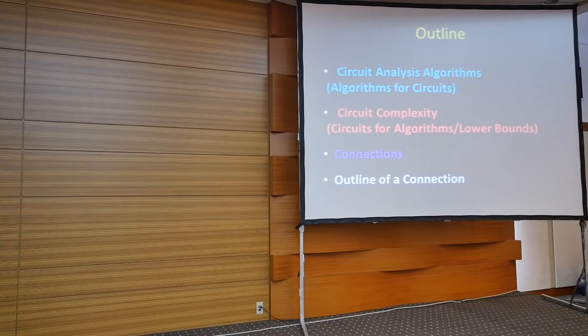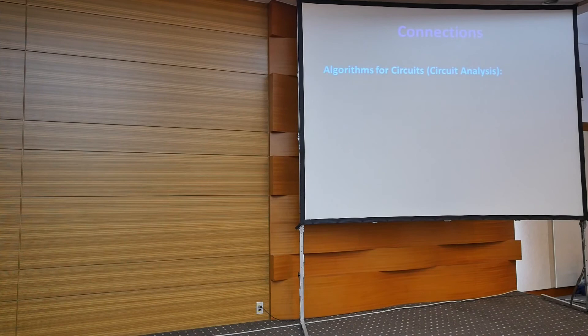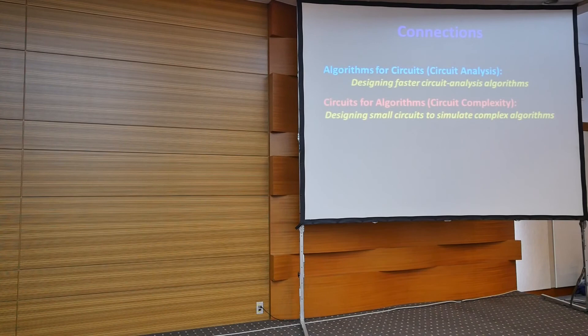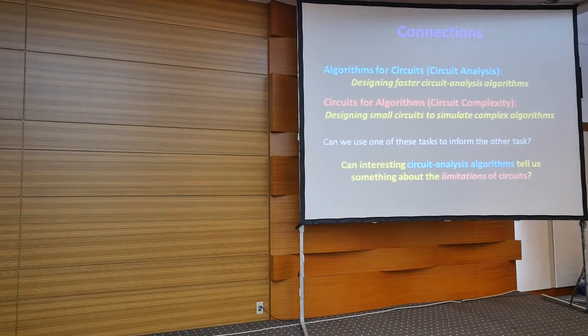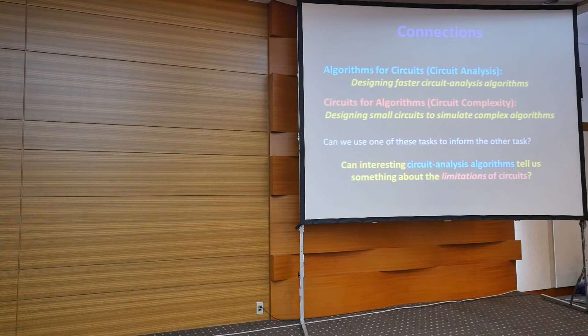Now I'll talk about the connections between these two areas. In algorithms for circuits, we're designing faster circuit analysis algorithms — taking an arbitrary circuit as input and saying something interesting about it no matter what it is. In circuits for algorithms, we're trying to design small circuits to simulate complex algorithms, or prove that no small circuits exist. Can we use one of these tasks to inform the other? One is a lower bound task; the other is an algorithm design task. The interesting direction is whether circuit analysis algorithms tell us anything about the limitations of circuits. This is an implication in the counterintuitive direction, since we understand algorithms well but not lower bounds.